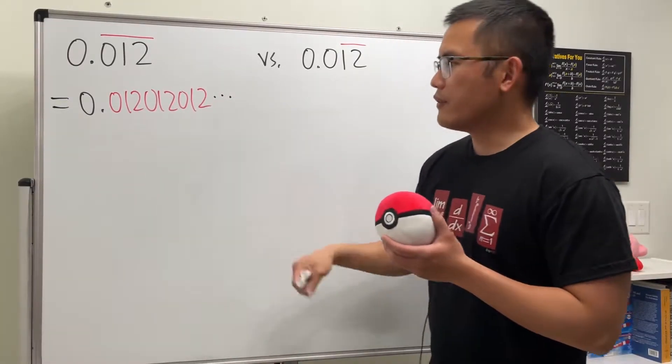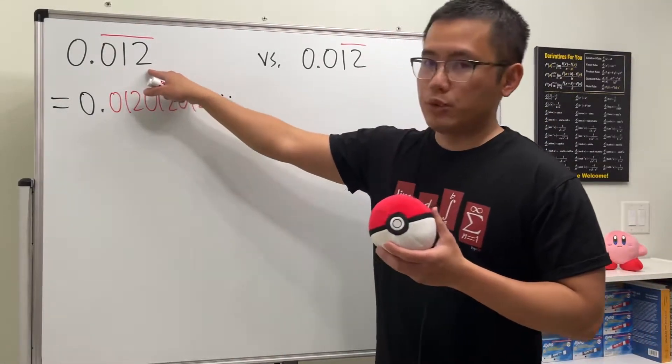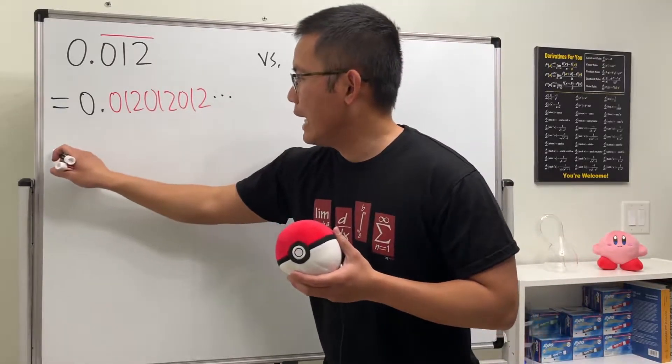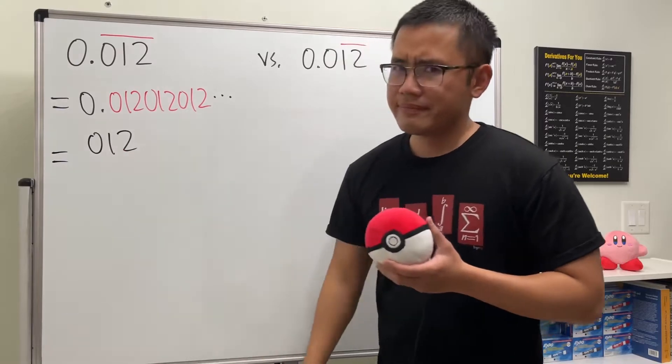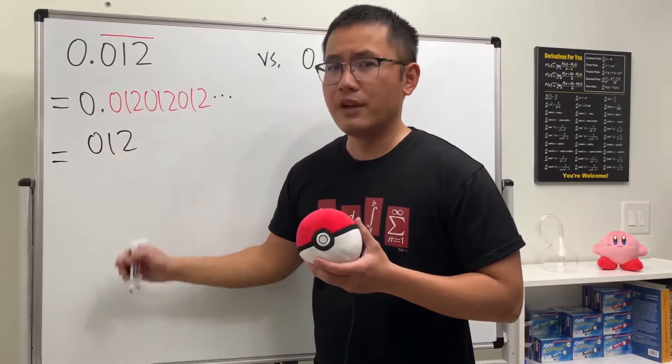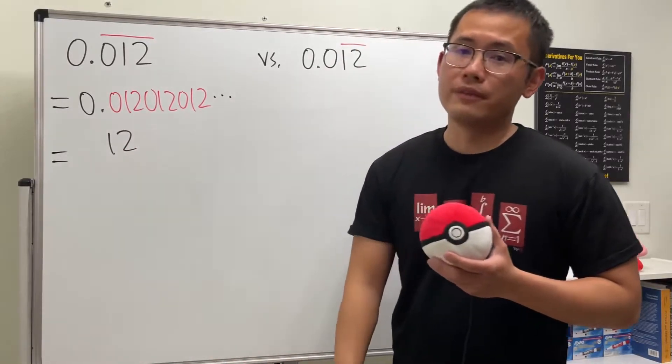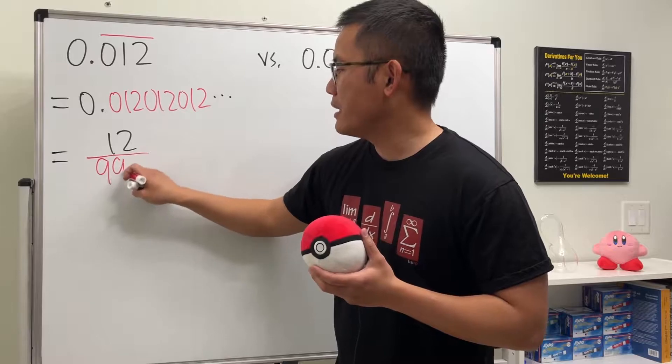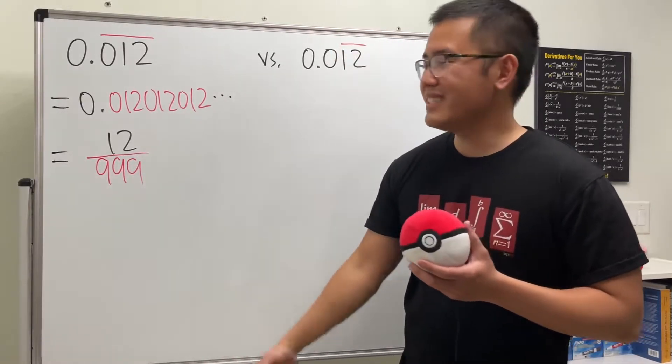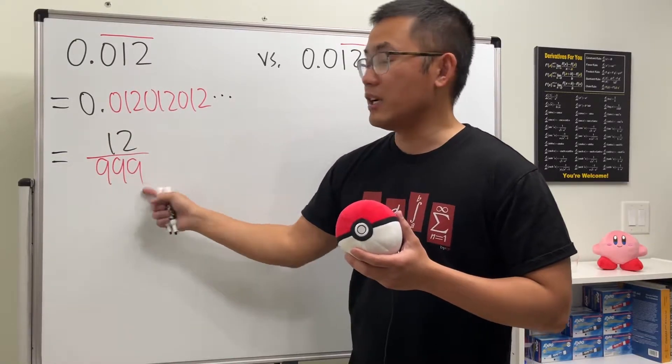So how can we convert this into a fraction? This is actually not so bad. You see that all these three digits are repeating, so all we have to do is just write down these numbers, which is 0, 1, 2. But really, this is just 12, so you don't have to write down this 0, just write down 12. And then divide it by 3 nines. Why 3 nines? Because we have 3 digits, so you just divide it by 3 nines.